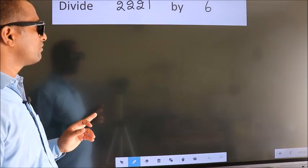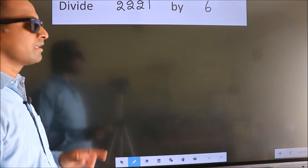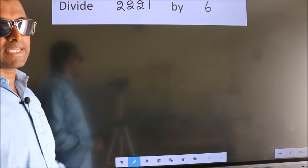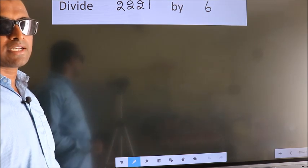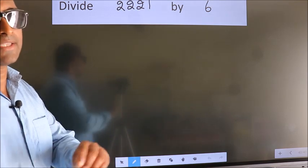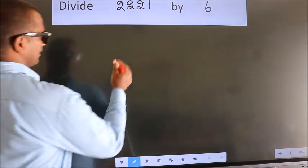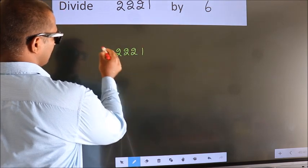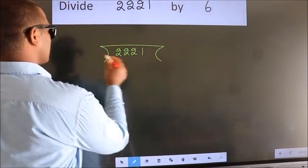Divide 2221 by 6. While doing this division, many do this mistake. What is the mistake that they do? I will let you know. But before that, we should frame it in this way.